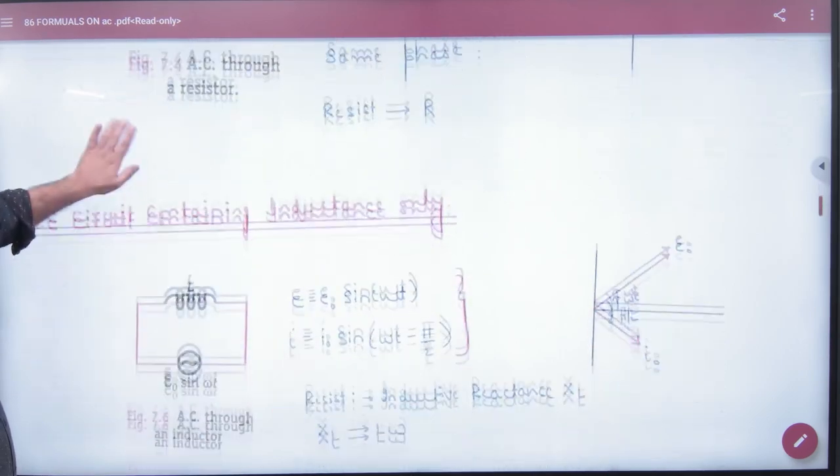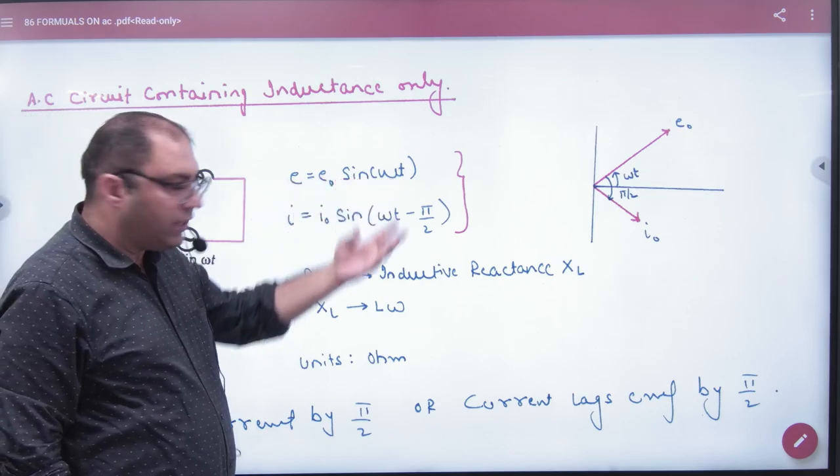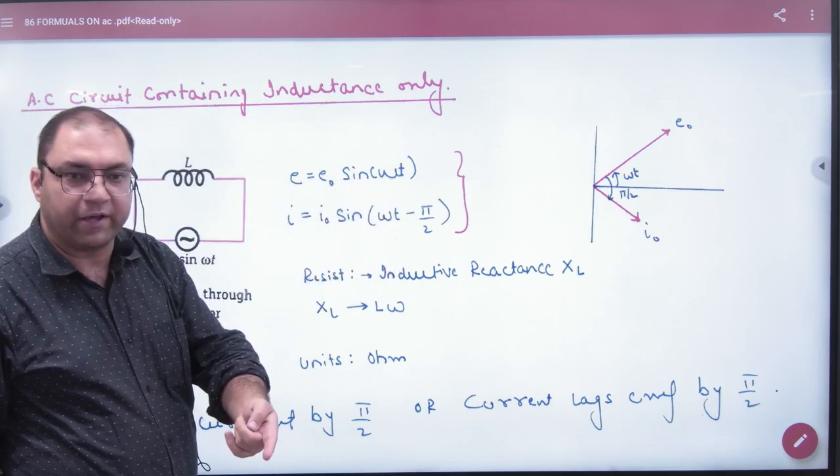This point is clear. Then we will write AC circuit containing inductance only. So what was E? E0 sin omega t. What is current? I0 sin omega t minus pi by 2.